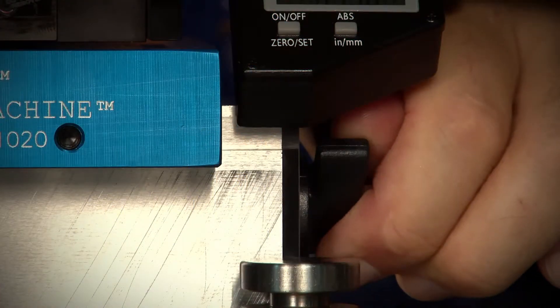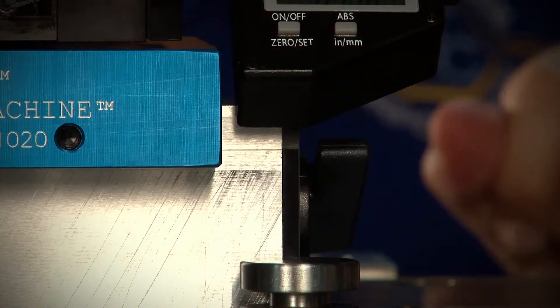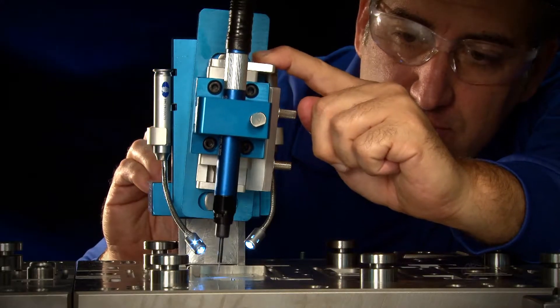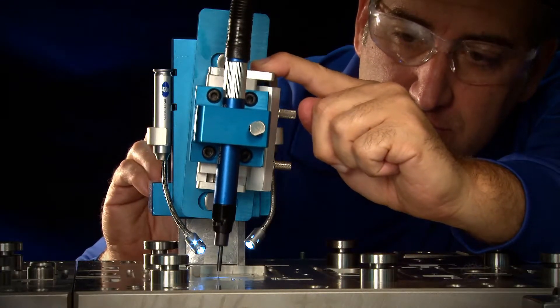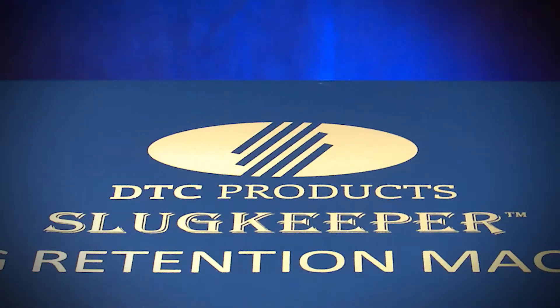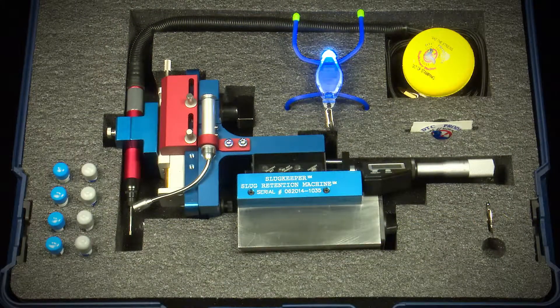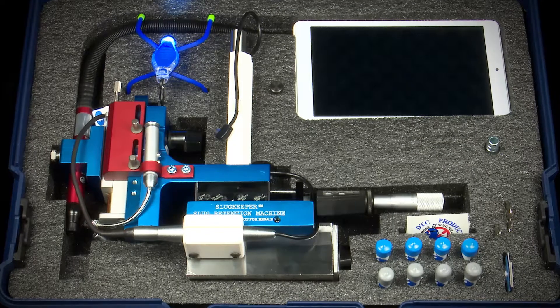A magnetic base allows it to be mounted temporarily, but firmly in place on the die surface during the grooving operation. When it's not in use, the slug keeper can be kept handy in its sturdy carrying case ready for the next task.